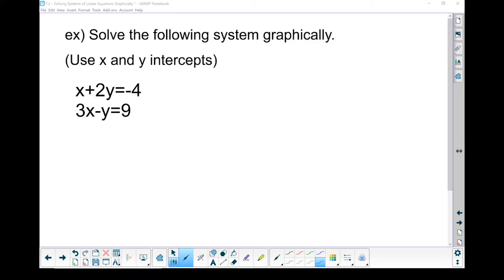Let's solve a system of linear equations. We're going to do it graphically, which means we're going to draw it on a graph and look for the point where those two lines cross. The first method I'm going to go through is using x and y intercepts. So I've got my system: x plus 2y equals negative 4, and 3x minus y equals 9. A good habit to get into is to number your equations. I'm going to call that one equation number 1, and this one will be equation number 2. We're going to graph each one separately and then take a look at where those two lines happen to cross.